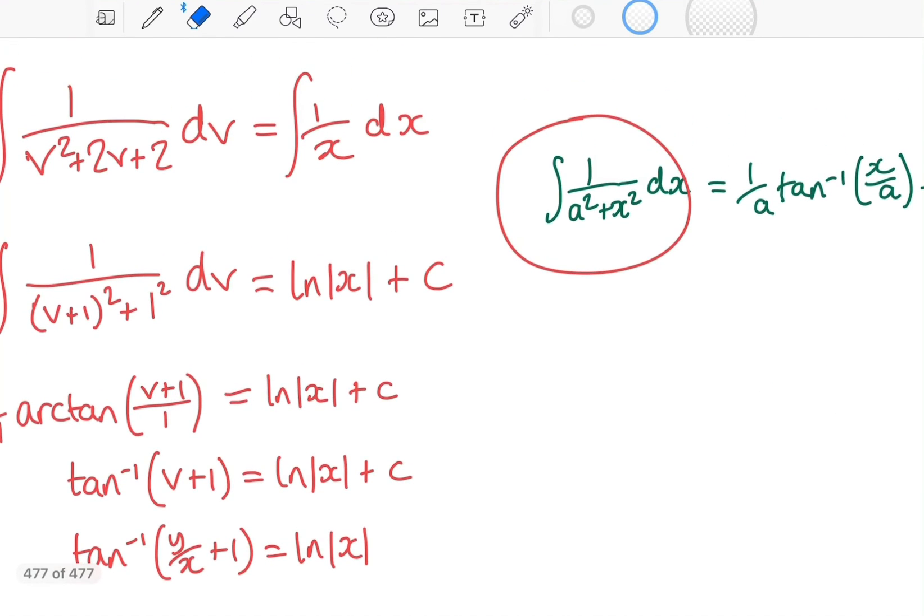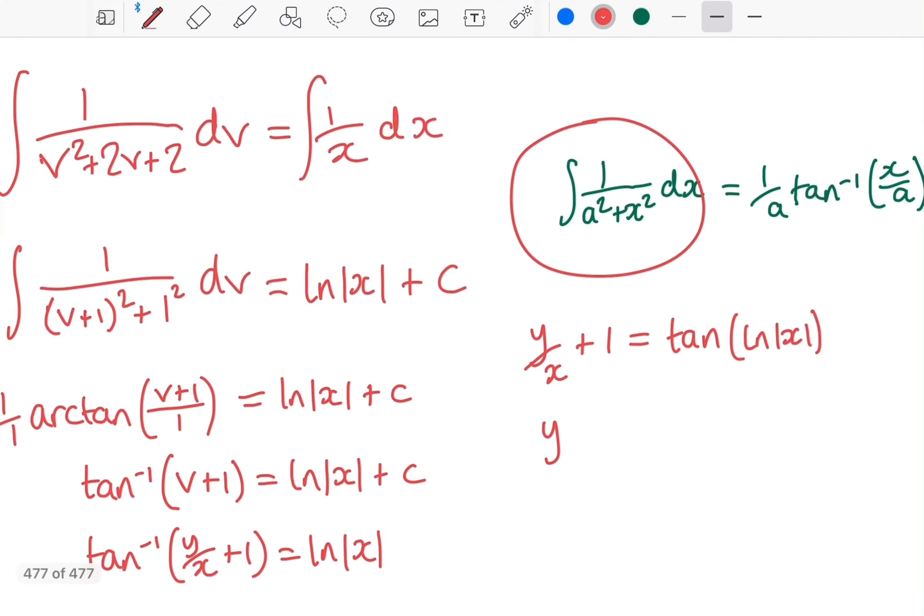And now it's just a case of rearranging this. y over x plus 1 equals tan of ln of x. So we did tan of both sides. And then I'm going to subtract 1 and multiply everything by x. And I finally have my solution, y as a function of x. And that is homogeneous equations.